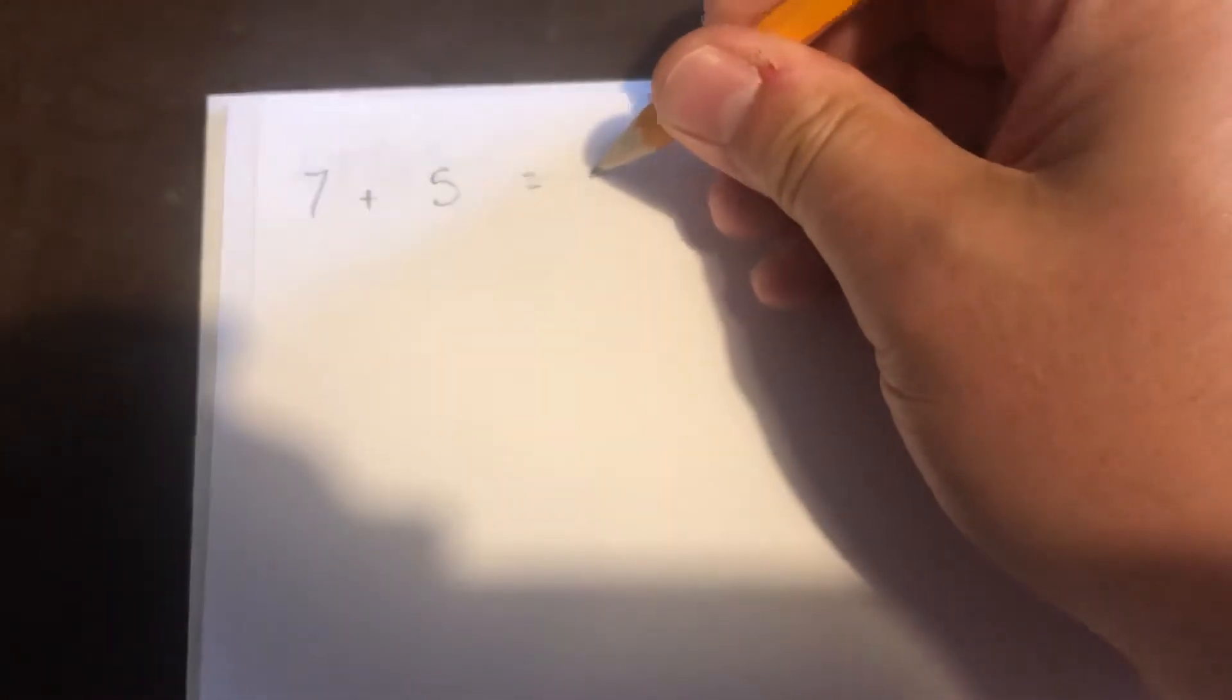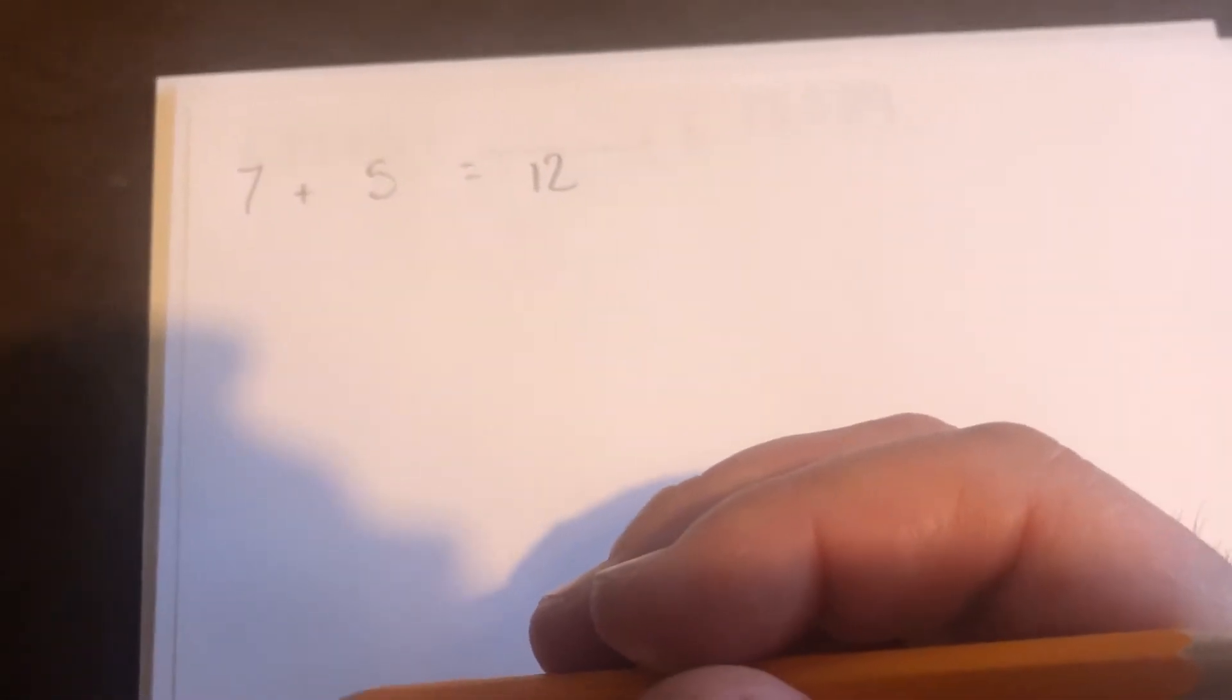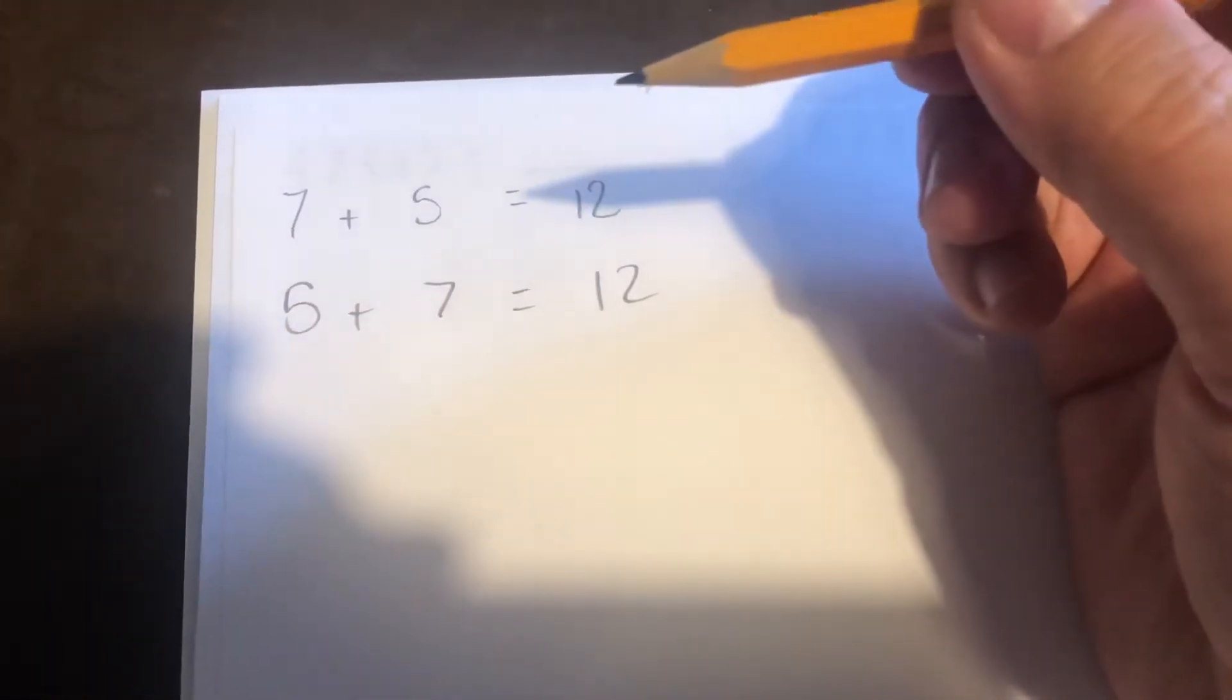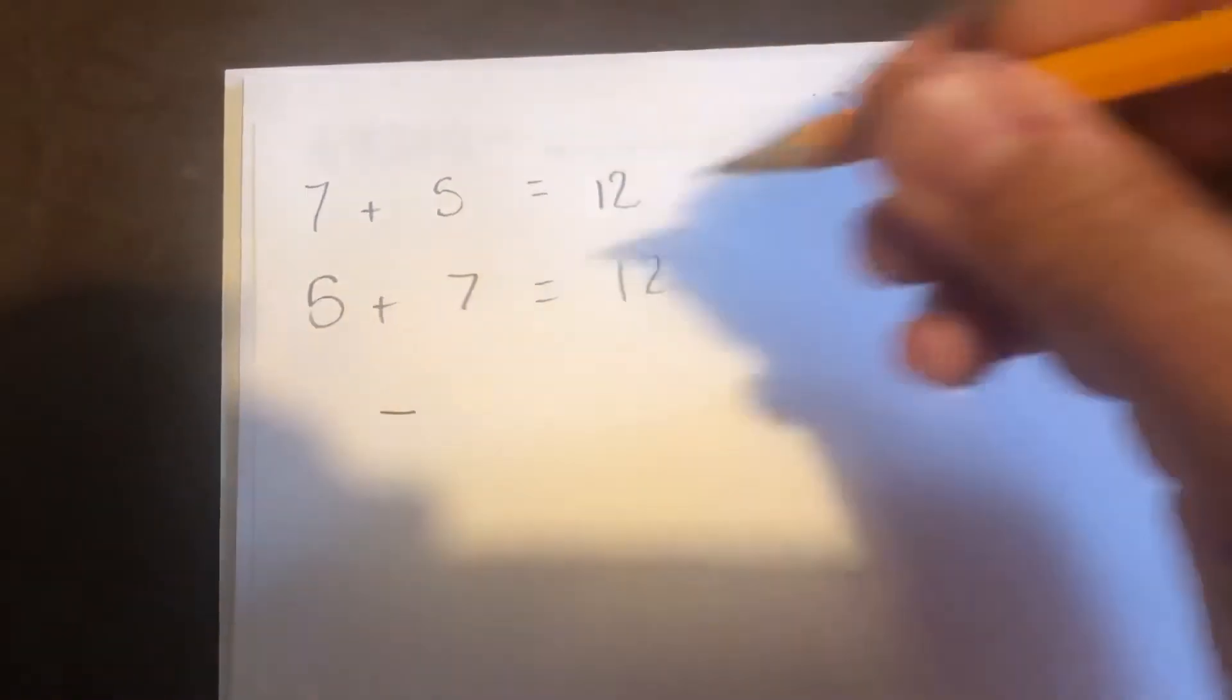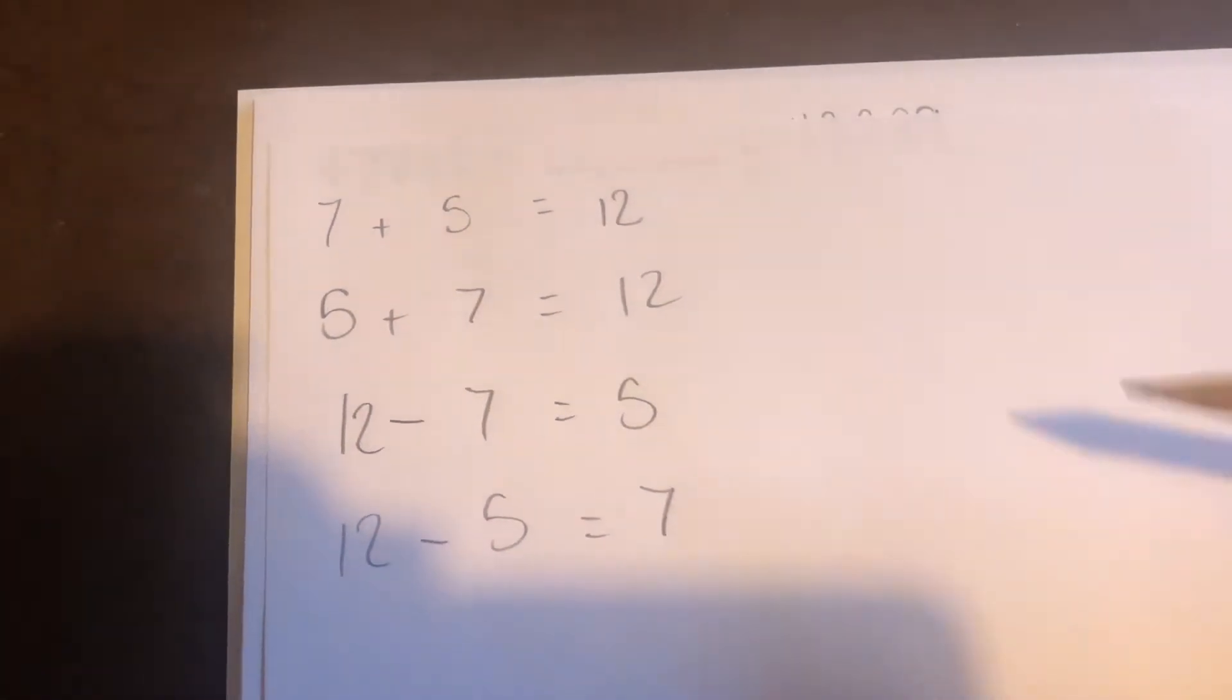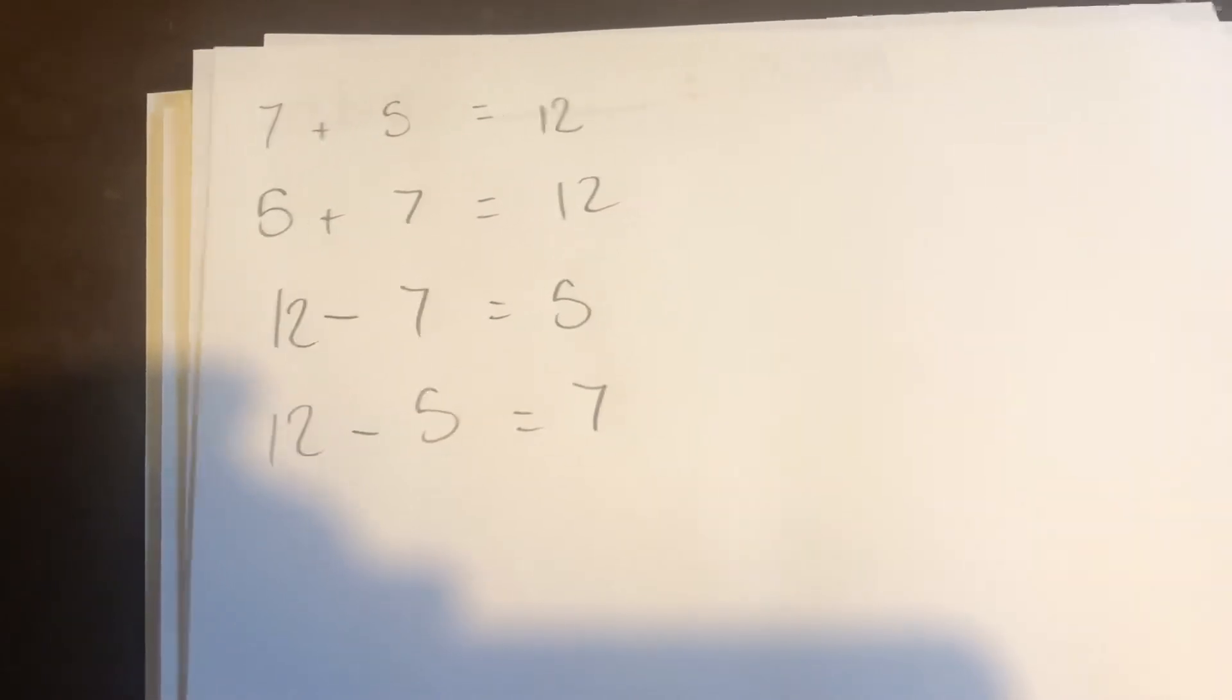Before we do that, we need to remind ourselves about inverse operations. So if I go all the way back to this one here, it's a simple question: 7 add 5 is 12. I need to know that I can change that number sentence around, so 5 add 7 also equals 12. I can then do the inverse of that, so I can change this addition into a subtraction: 12 minus 7 equals 5, or 12 minus 5 equals 7. This is the inverse, showing that we can jiggle these questions around, and we'll need that when we get to these missing number problems.